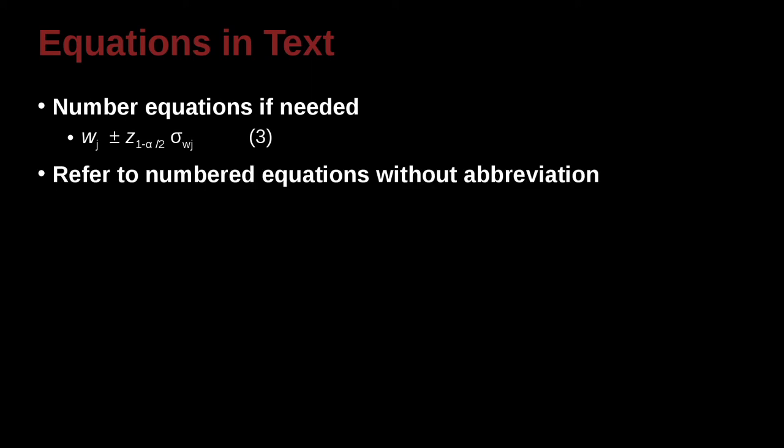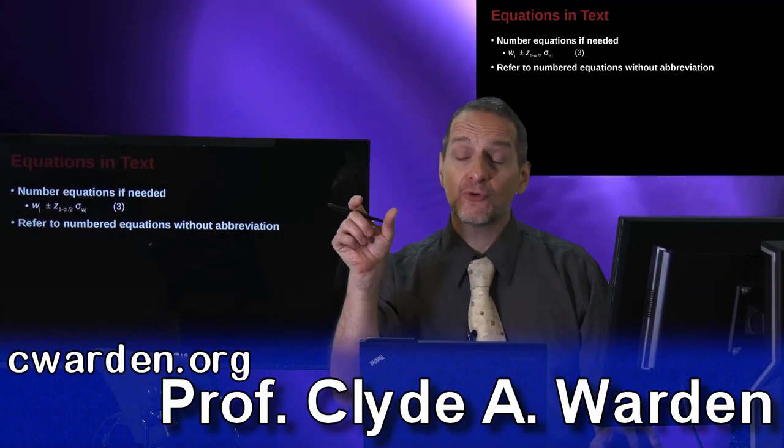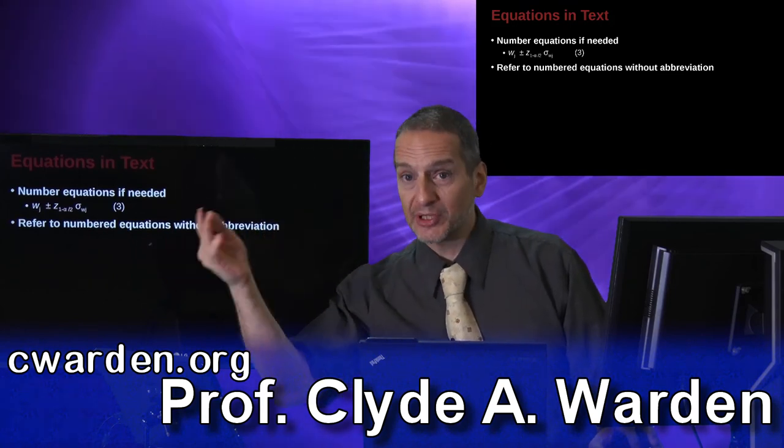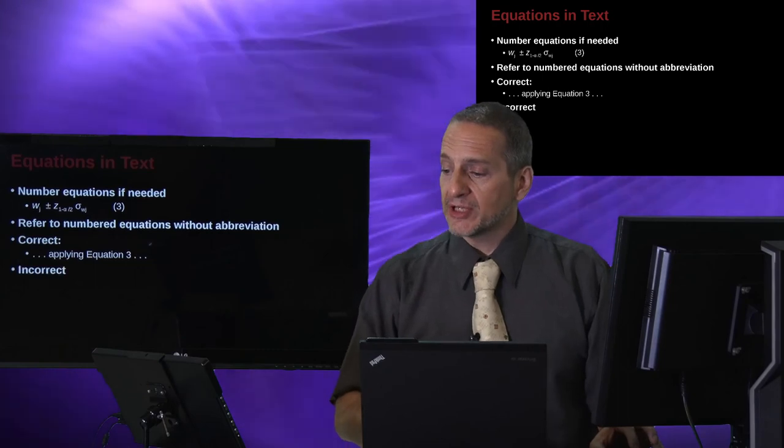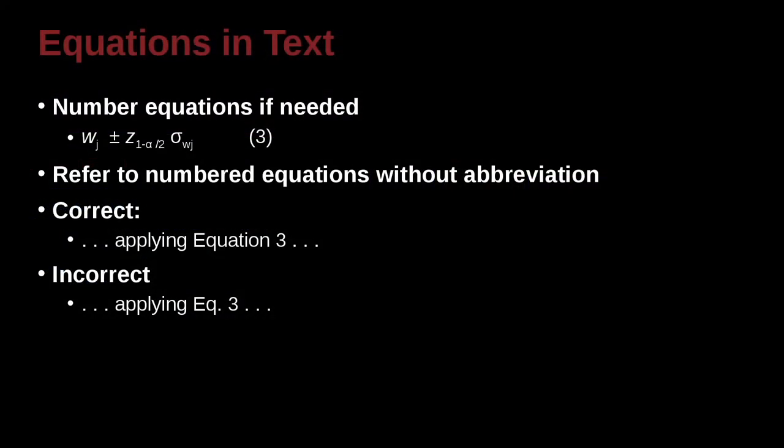Then when you're writing your body of your paper, rather than having the formula right there, you say see formula 3, see formula 2. So in that case, we could say, here's a good example, applying equation 3. So that means what? That means I'm going to use equation 3, and I'm talking about equation 3, but I don't want to write equation 3 because it takes up too much space or it's too complicated.